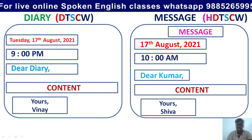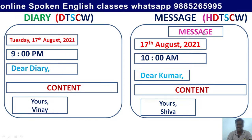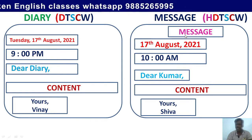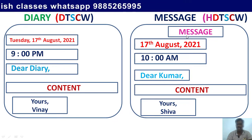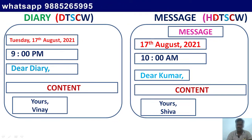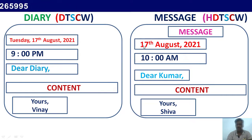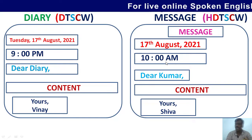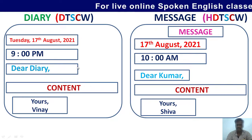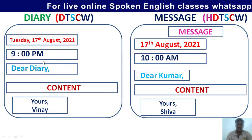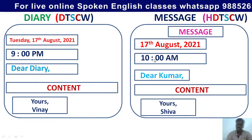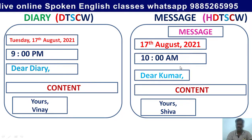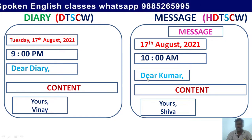Coming to the message: H stands for heading. The heading is simply the word 'MESSAGE' written in capital letters. D stands for date — no need to mention the day here, only the date: 17th August 2021. T is for time — the message can be written at any time, unlike the diary which should be written only at night. So here we have mentioned 10 a.m.